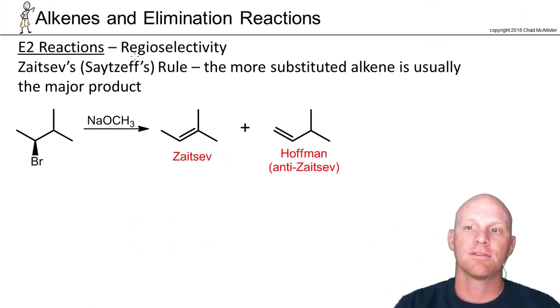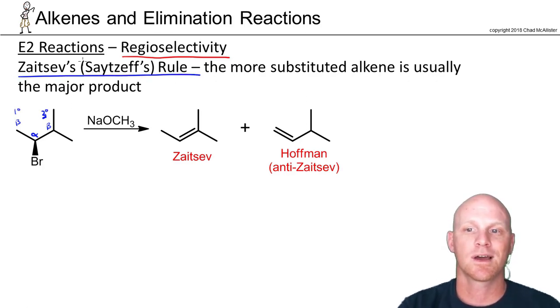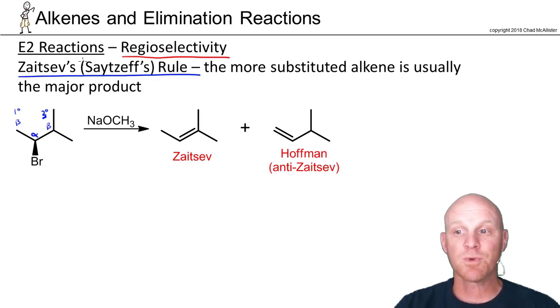So now we want to take a look at the regioselectivity of an E2 reaction. So this occurs if you have more than one beta carbon with hydrogens. In this case, there's our alpha carbon with the leaving group. And right next to it, we have not just one beta carbon, but two. And one of them is primary, and the other one is tertiary. So it turns out we use what's called Zaitsev's rule, and it's spelled a couple different ways. It's a guy from Russia. It's kind of transliterated, so you see a couple different spellings. These are the two most common.